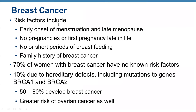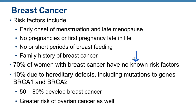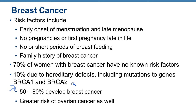Risk factors for breast cancer include early onset of menstruation and late menopause, no pregnancies or first pregnancy late in life, no or short period of breastfeeding, and family history. 70% of women with breast cancer have no known risk factors; only 10% are due to hereditary defects, including mutations in BRCA1 and BRCA2 genes.